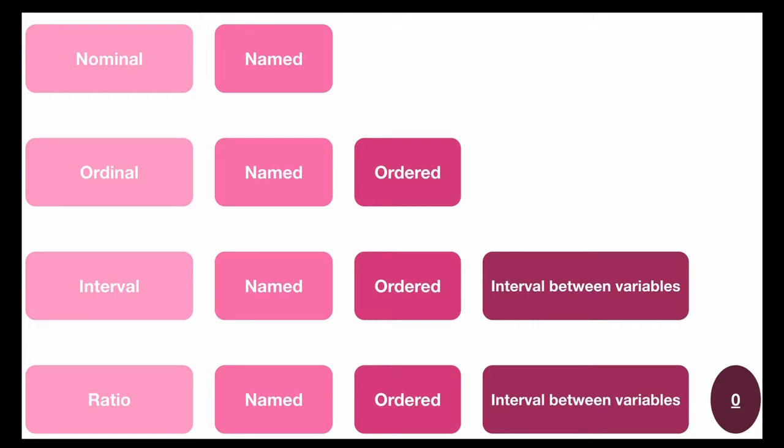Moving on to interval scales. Interval scales are meaningful organizations with equal differences, and the best example is temperature scales like degrees Fahrenheit and Celsius.